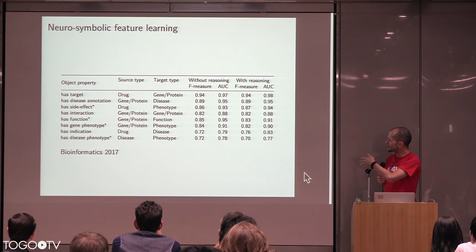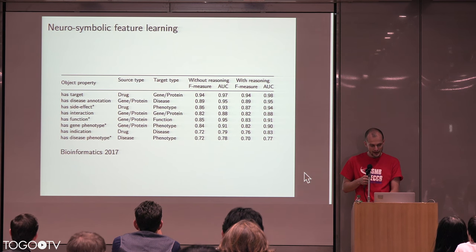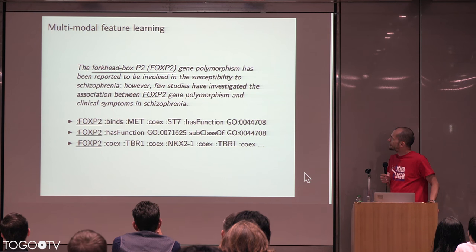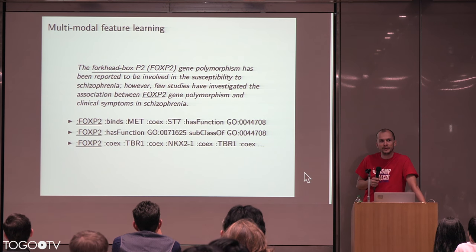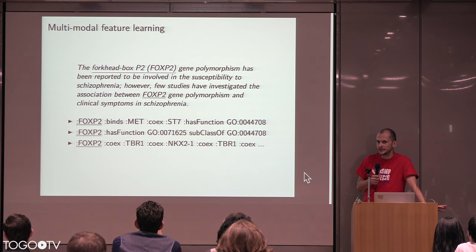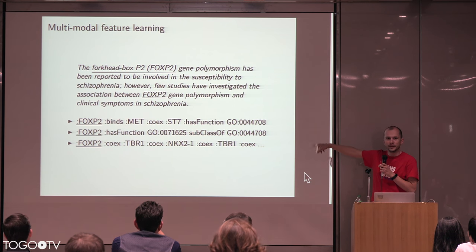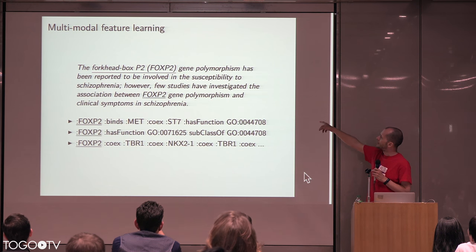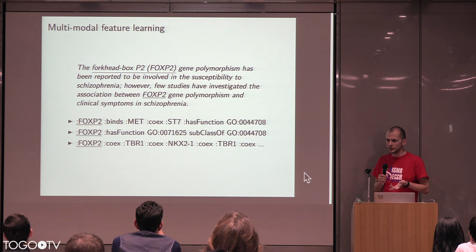These predictions are published in Bioinformatics. I will not go into very much detail. But there is one more thing: we do not only have graphs. A very large part of our community works with many different types of data, most notably text. When we look at text, this is a corpus of walks generated by the method from last hackathon. The first example is an abstract or a sentence in an abstract that also talks about the same protein, FOXP2.